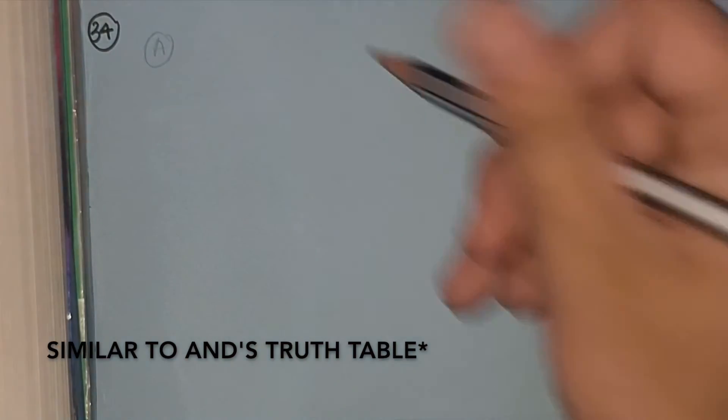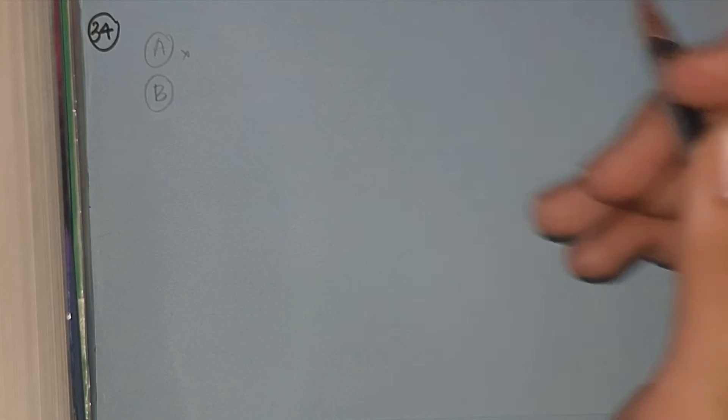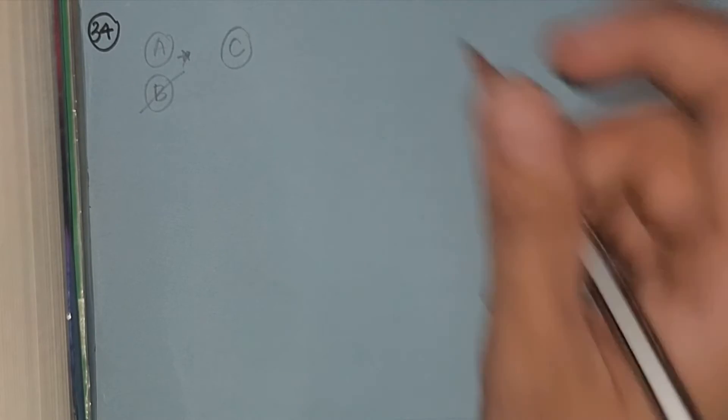Question 34. We have been given a truth table for a logic gate. We have AND — both inputs must be true for a true output — NOT, OR, and NOR (the opposite of OR). In the first row, both inputs are 0 and the output is 0. AND is a possibility. NOR cannot apply because NOR with 0,0 should give 1. NOT is eliminated because it only requires one input.